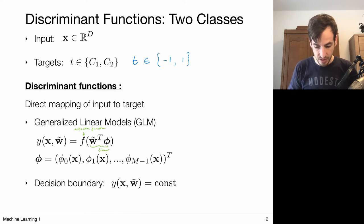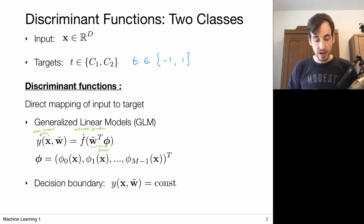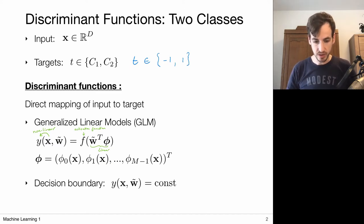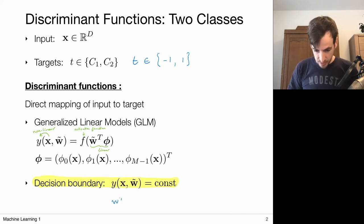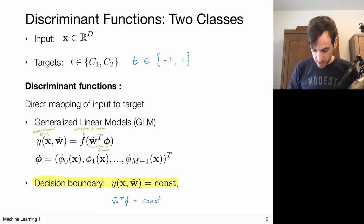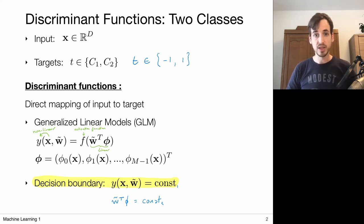This defines a mapping from X to a corresponding target which is nonlinear overall. It's a generalized linear model because we have this linear model but then also pull it through an activation function. The decision boundaries in this setting are obtained by setting this function value to a constant, and that leads to the fact that the decision boundaries are actually determined by the linear model. So with these generalized linear models we obtain linear decision boundaries.